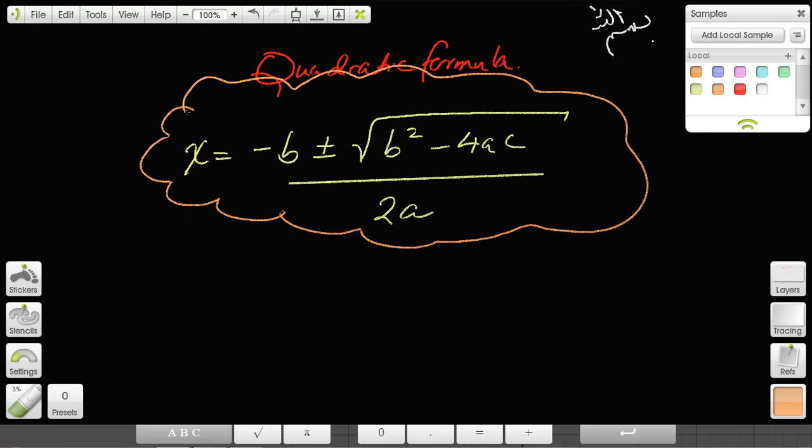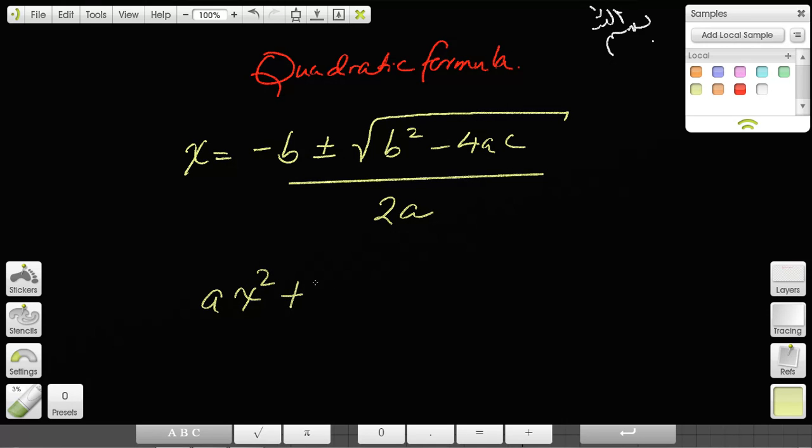Do whatever it takes to memorize this. To apply this formula, you have to understand that the b here refers to b in the equation, and a refers to a in the equation, and c refers to c. In other words, a, b, and c in the quadratic formula refer to the coefficients of the variables and the constant term in the quadratic equation ax² + bx + c = 0.